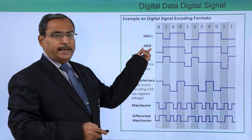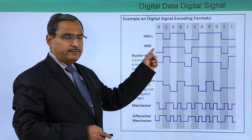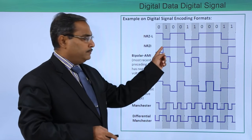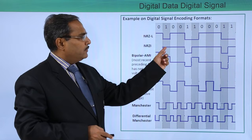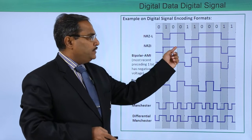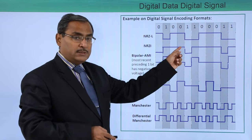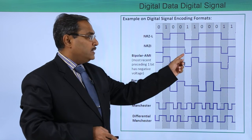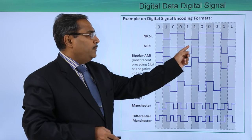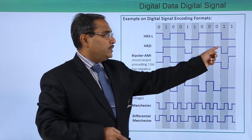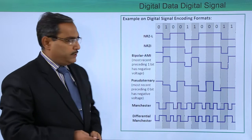Let us implement NRZ-I. As I was at the low level, for the first 1 I will go to the high level. 0 means no transition, 0 means no transition, 1 means transition — as I was at the high level, I shall come to the low level. Then 1 means transition, 0 means no transition, 1 means transition, and again 1 means transition.